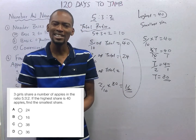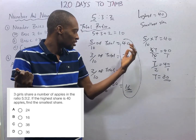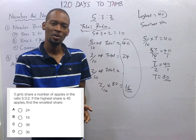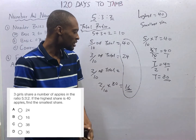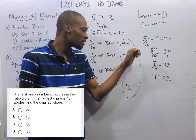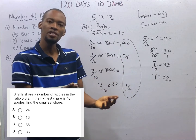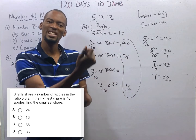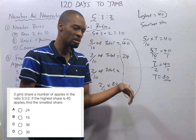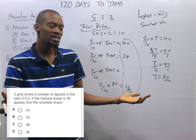Sometimes you will be asked to calculate how much each person got on the average of the share. The average will be 16 plus 24 plus 40, divided by 3. You will be asked to look for the difference between the highest share and the lowest share, which is 40 minus 16.